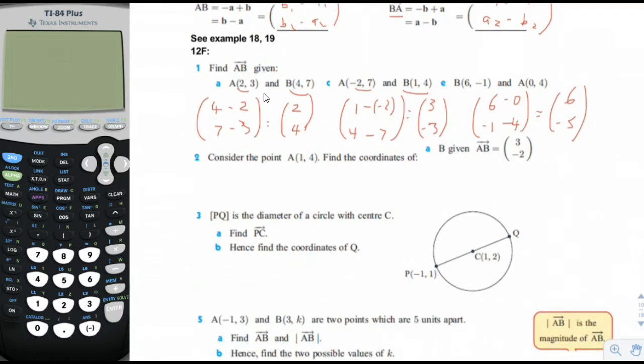Number two. Consider the point A, which is coordinates 1,4. Find the coordinates of B given that AB is equal to 3, negative 2. So we don't know the coordinates of B, but we want to know them. Remember that the equation is we subtract the B coordinates minus the A coordinates and that gives us the vector AB, which is 3, negative 2. Now we can just equate the X component with the X component and the Y component with the Y component. So B1 is equal to, add 1 to both sides, we get 4. B2 is equal to, add 4 to both sides, we get 2. So the coordinates of B are 4,2.